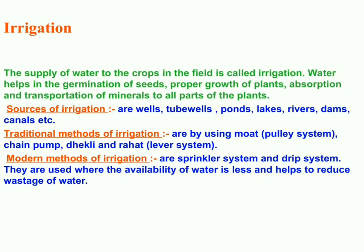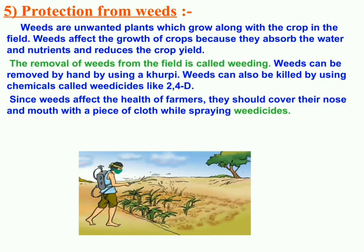The next important step is irrigation. The supply of water to crops at different intervals is called irrigation. Sources of irrigation include tubewells, wells, rains, and ponds. There are two types of irrigation methods: traditional methods like moat, chain pump, and rahat; and modern methods such as sprinkler system and drip irrigation system, which overcome the problems of traditional methods.